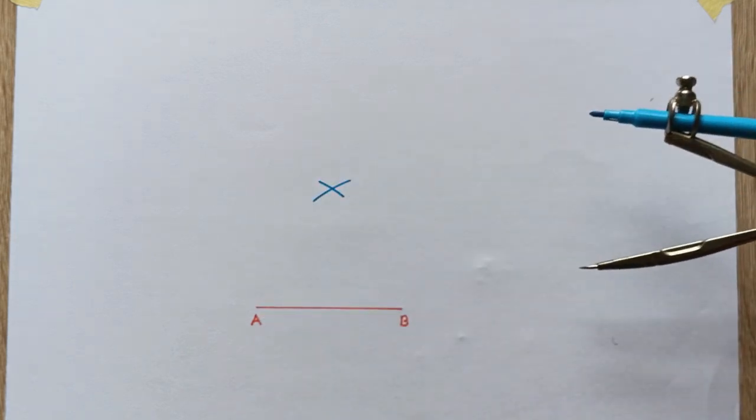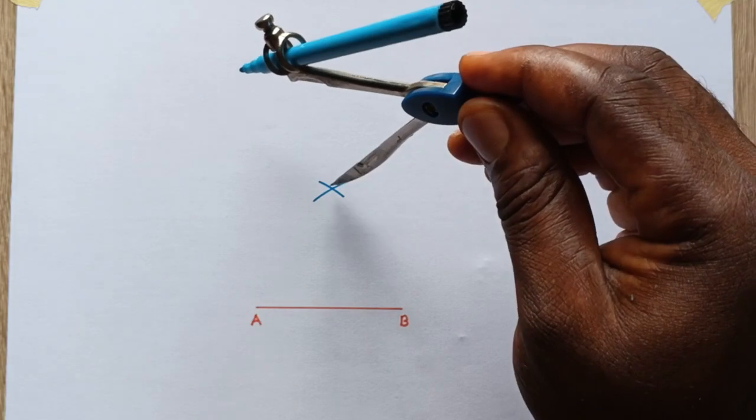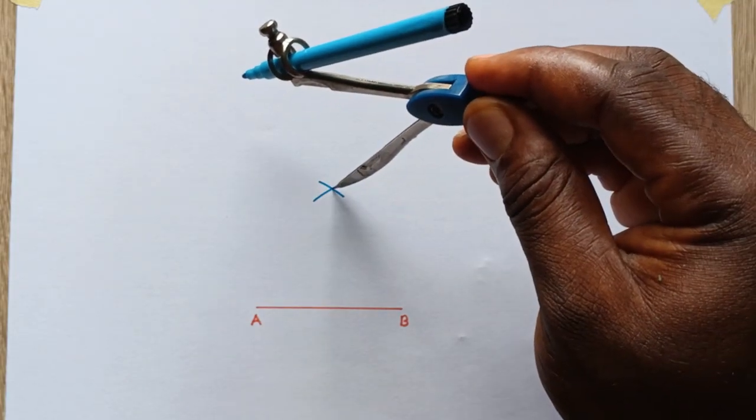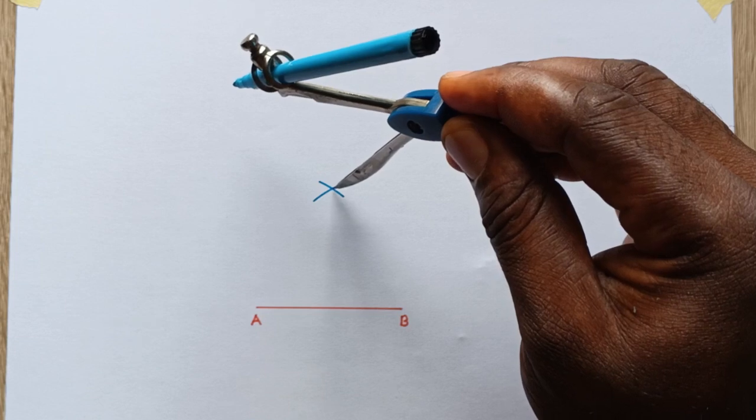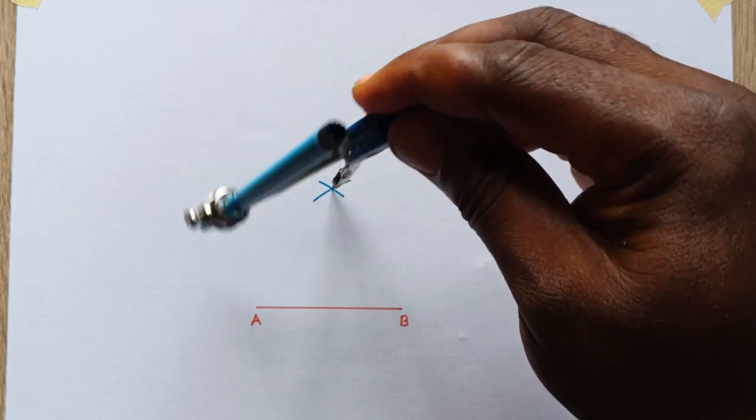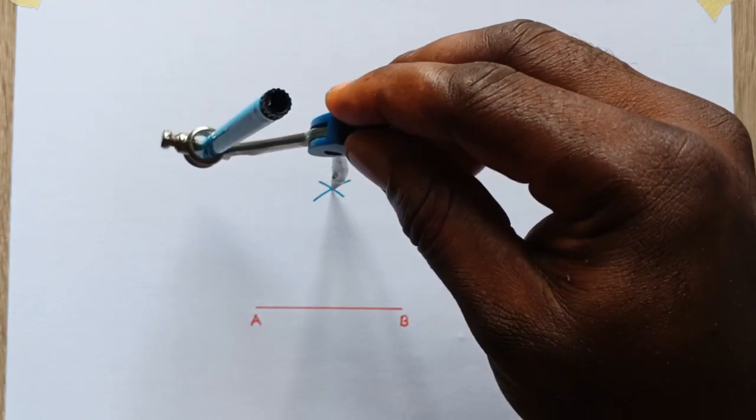The next step is to stand at this point using the same dimension where these two arcs intersect and then you now draw a complete circle.